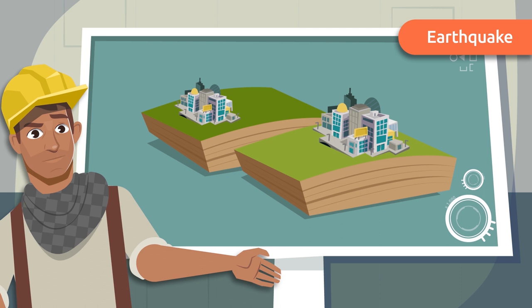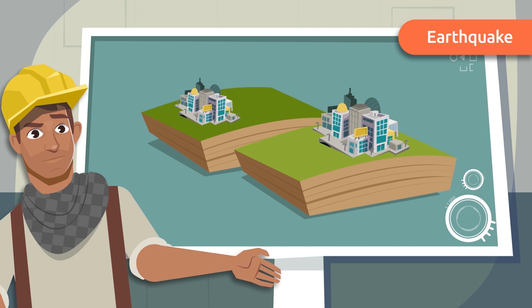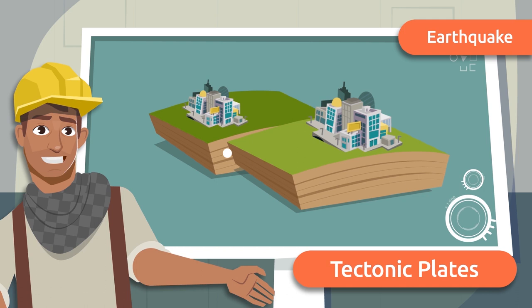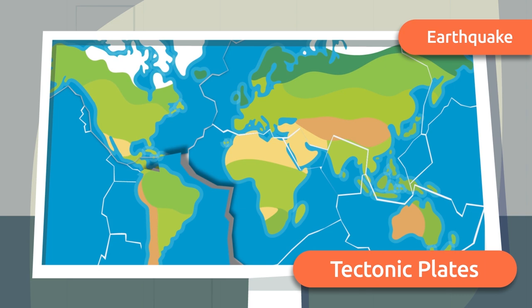An earthquake, also called a seism or tremor, is a sudden movement of the earth due to the collision of tectonic plates with each other. Tectonic plates are like pieces of a puzzle that make up the earth's surface that are constantly moving.